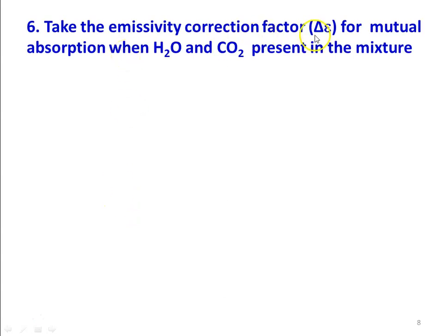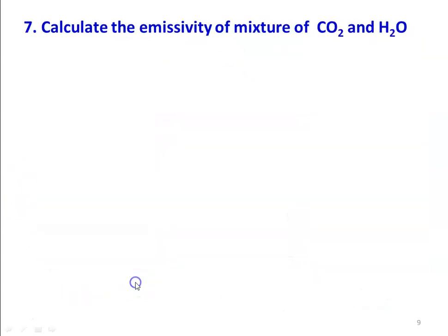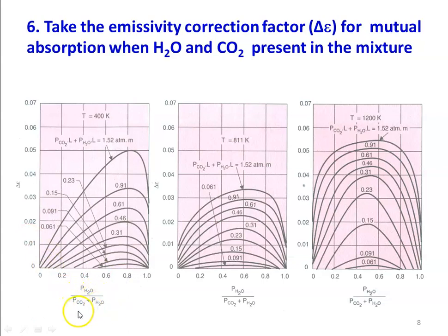We also need the emissivity correction factor Δε for mutual absorption of H₂O and CO₂ present in the mixture. CO₂ emits radiation that is absorbed by H₂O, and energy emitted by H₂O is absorbed by CO₂. For this mutual absorption correction, find Δε from the graph on page 110 of the data book. The x-axis is PH₂O / (PCO₂ + PH₂O), and there are three curves for temperatures 400 K, 811 K, and 1200 K. If the gas temperature differs from these values, use interpolation or extrapolation. Δε is read from the y-axis.